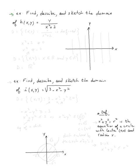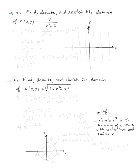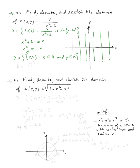Let's move on to the next example. We need to find the domain and describe it for h(x, y) = y / (x² + 2). The definition says the domain is the set of all (x, y) such that y / (x² + 2) is defined. It's defined when x² + 2 is not equal to zero. A rational function is defined everywhere except where the denominator is zero. In other words, we don't want x² = −2, but this is always true. Therefore, the domain will be all (x, y) such that x is a real number and y is a real number — so it will be the whole xy-plane, also called ℝ².